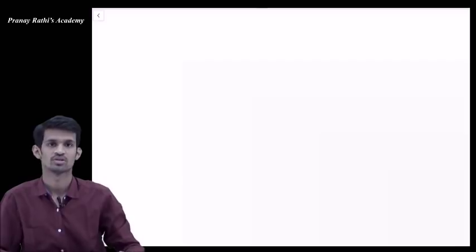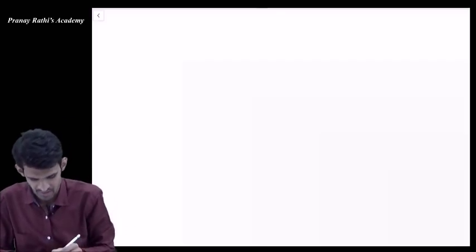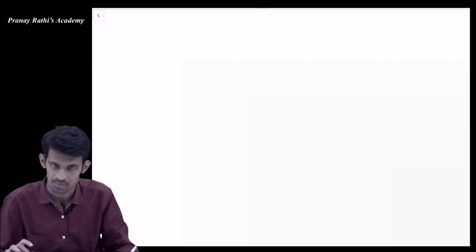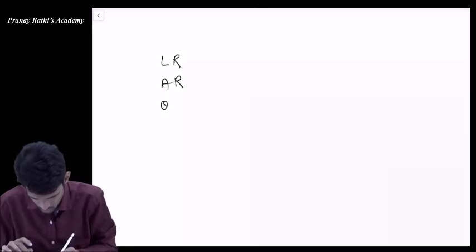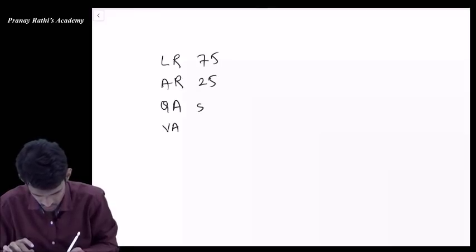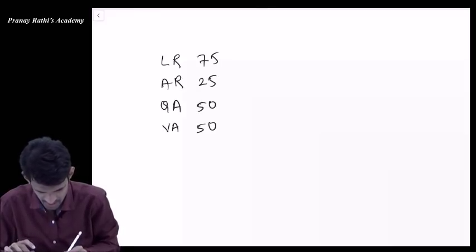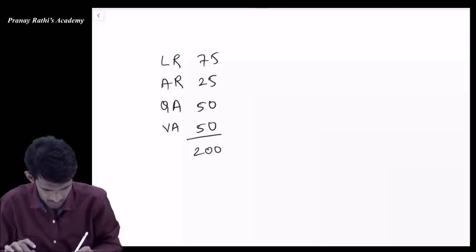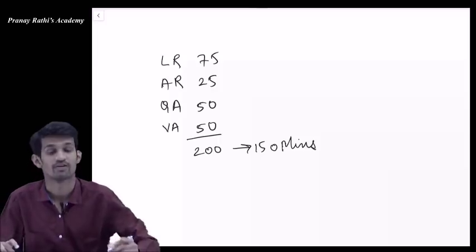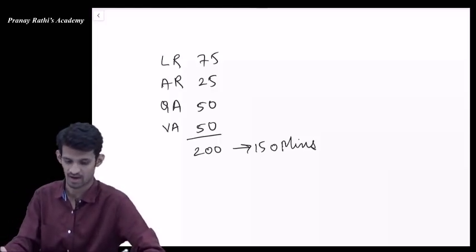The paper has 200 questions with four sections: logical reasoning 75, abstract reasoning 25, quantitative aptitude 50, and verbal ability 50. This 200 question paper needs to be solved in 150 minutes, so fast is not sufficient, you have to be super fast here.